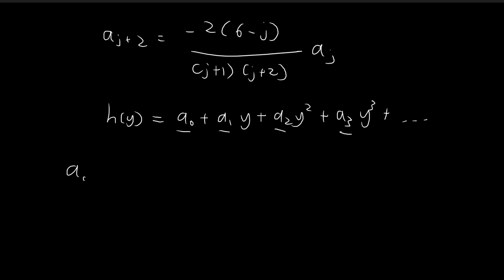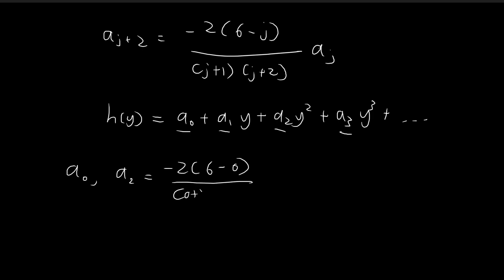For any given value of A0 — A0 is some constant we don't know yet — we are able to deduce what A2 should be using this recursion formula. We start off at j equal to 0, so we get negative 2 times (6 minus 0) divided by (0 plus 1)(0 plus 2) times A0. This simplifies to negative 6 A0.